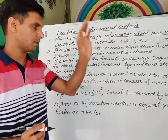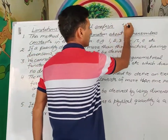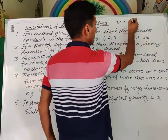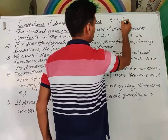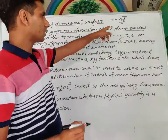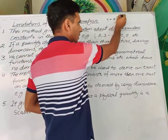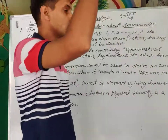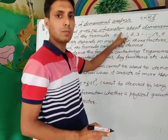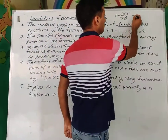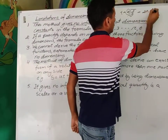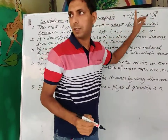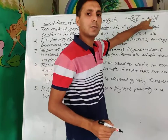For example, we found that the period is K times the square root of L upon J. In this case, the relation is under root L upon J, but this constant K comes out from experiment. So it does not come from the dimensional analysis.